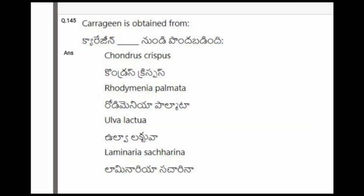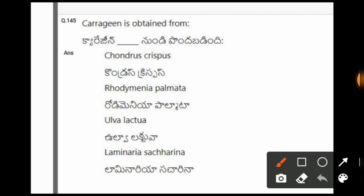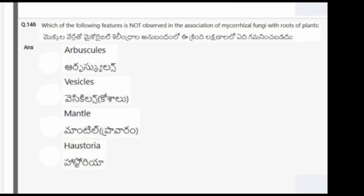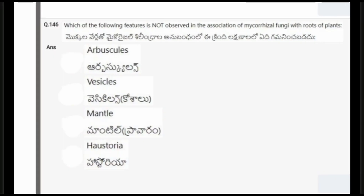Next question: Carrageenan is obtained from? The options are Chondrus crispus, Rhodymenia palmata, Ulva lactuca, Laminaria saccharina. The correct option is the first one, Chondrus crispus.